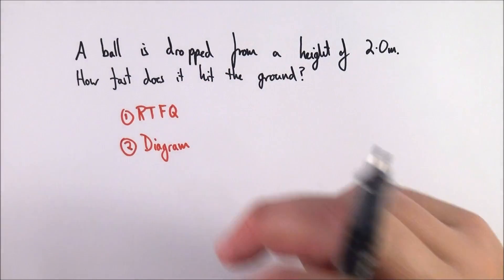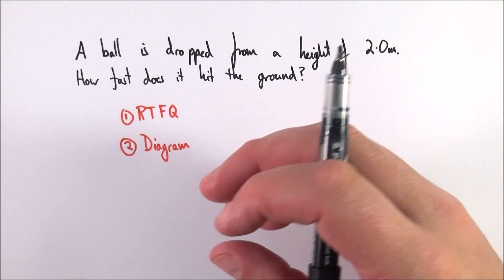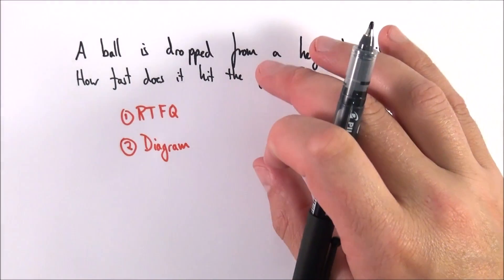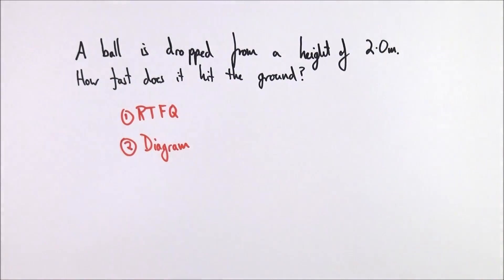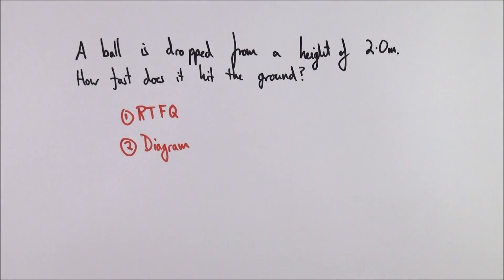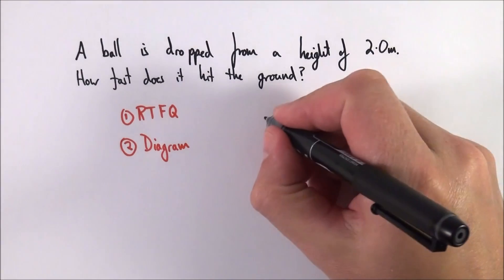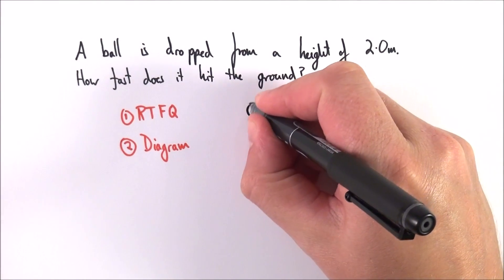A diagram is really important because in order to draw a diagram you've got to show that you've actually read the question and understood what's going on. In this case, I've got a ball dropped from a height of two meters. How fast does it hit the ground?